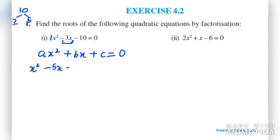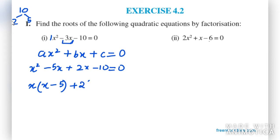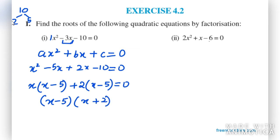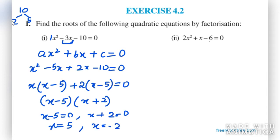So we get x² - 5x + 2x - 10 = 0. From the first two terms we take x common, leaving (x - 5). From the last two terms we take 2 common, leaving (x - 5). So the two factors are (x - 5) and (x + 2). Equating to zero, the first root is x = 5 and the second is x = -2.